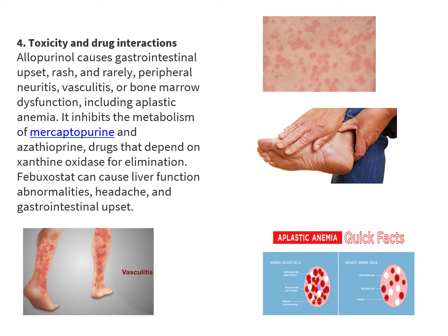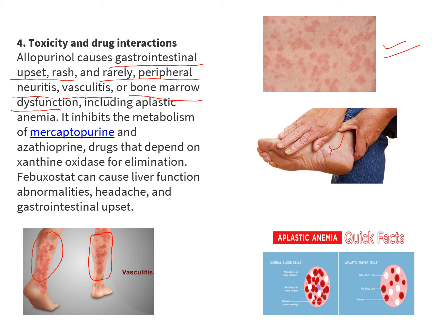Coming to toxicity and drug interactions — allopurinol causes gastrointestinal upset and rash. Patients should be informed about side effects so they can report them. Rarely, you can see peripheral neuritis, causing pain and tingling sensation in peripheral regions like the legs. Vasculitis can also occur, presenting as patchy red dots on the legs. Bone marrow dysfunction is another rare side effect, which can lead to anemia or aplastic anemia.